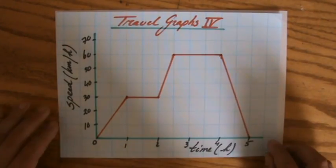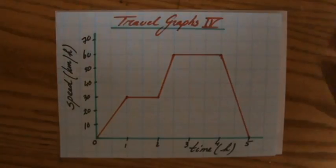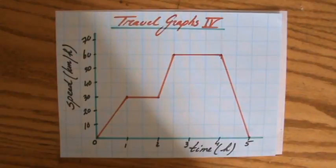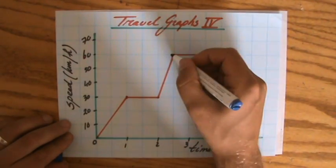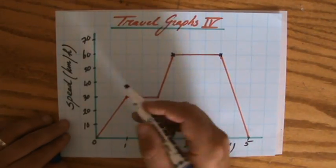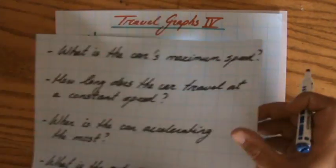First of all, what is the car's maximum speed? Now considering this is a speed-time graph, the maximum speed the car has between this moment of time and that moment of time is 60 kilometers per hour.